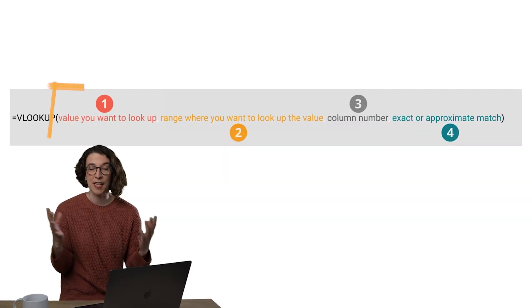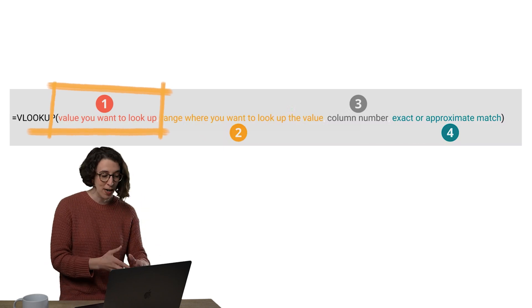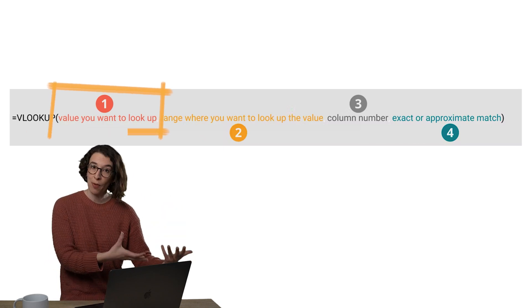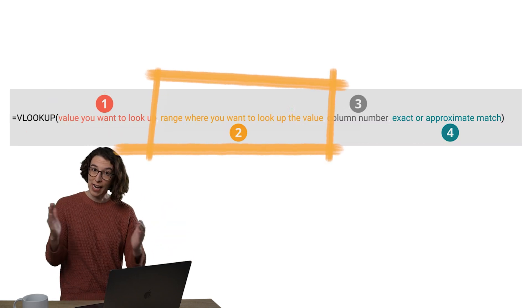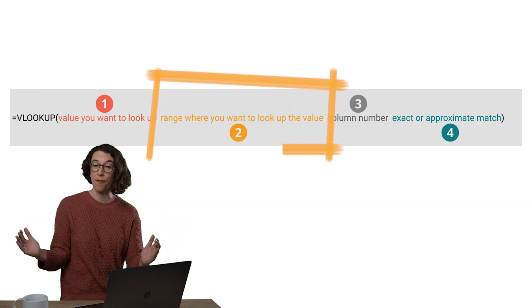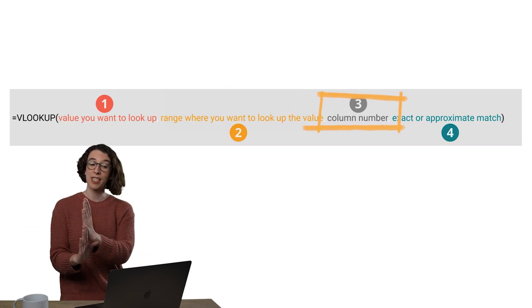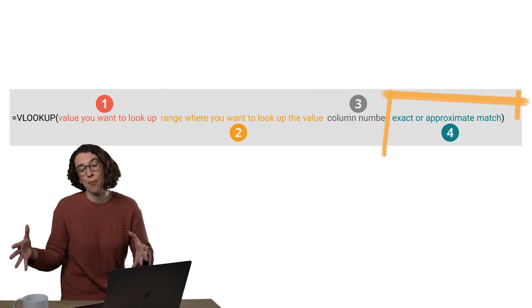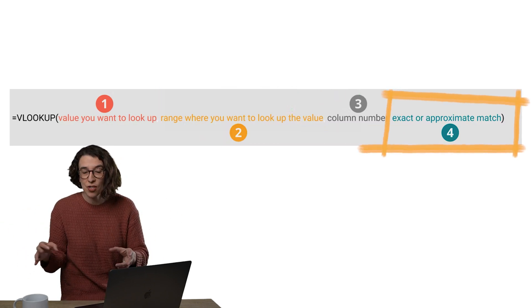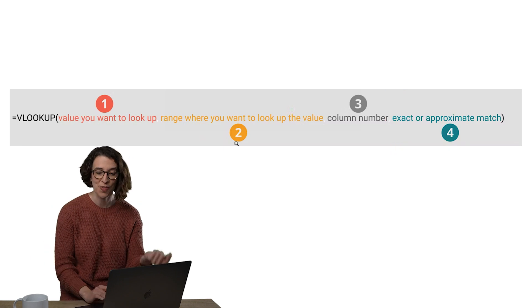So here we are with a VLOOKUP. The first part is the value we want to look up, then the range that we want to look up from, then the column number we're interested in, and then the exact or approximate match. So that's the anatomy you're used to.